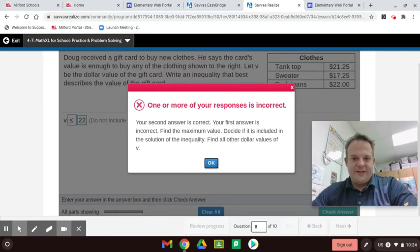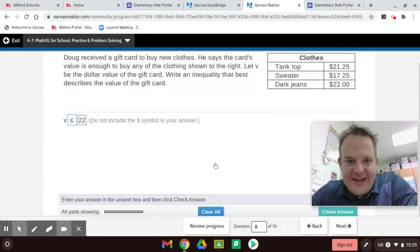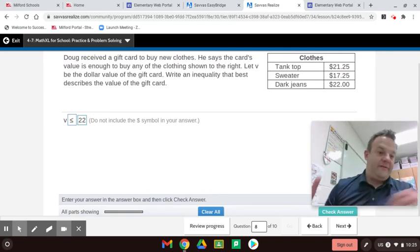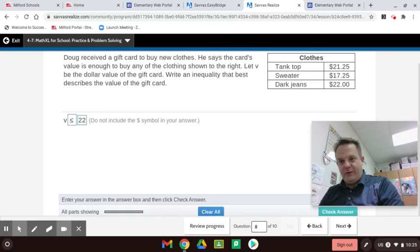Your second answer is correct. Your first answer is incorrect. Find the maximum value. Wasn't 22 the greatest? So, I think that they're saying you could buy all those three things. You could buy all three of them. So, we're going to add all three of them up and see. I mean, if they're saying we could buy all of them, let's buy all of them. Actually, only if you want to. We don't want to spend frivolously. We could save the gift card for next time, right?